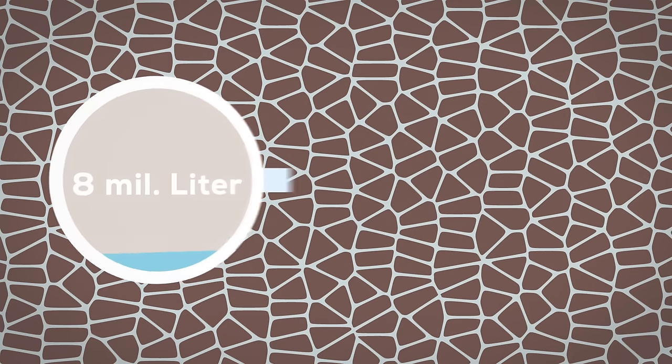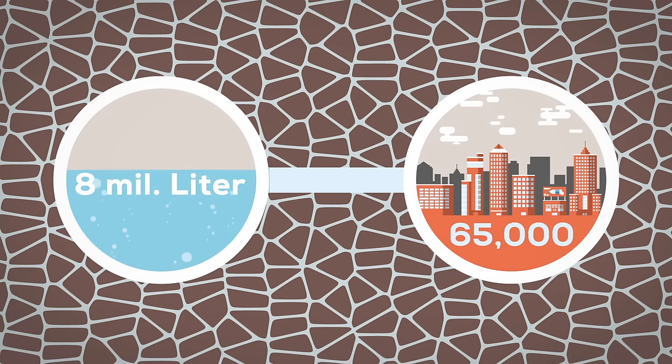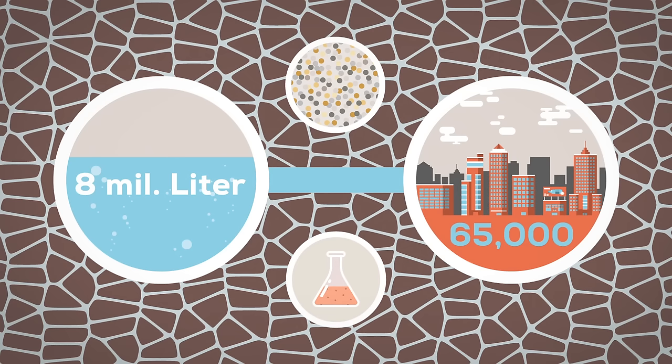Next, the fracking fluid is pumped into the ground using high-performance pumps. On average, the fluid consists of 8 million liters of water, which amounts to about the daily consumption of 65,000 people, plus several thousand tons of sand and about 200,000 liters of chemicals.